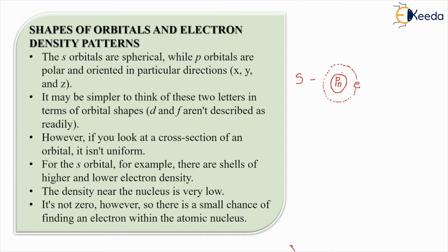The P orbital is polar oriented. Over here you can see the P is polar and oriented in a particular XYZ direction. Now what do we mean by XYZ direction? Every orbital is categorized with respect to three axes. I'm just drawing three axes over here - X axis, Y axis, and Z axis. You can either switch Y and Z. So every orbital shape will be with respect to the three axes X, Y, and Z.